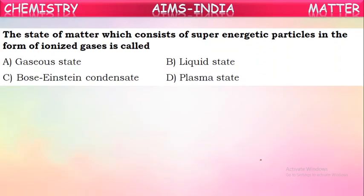Question 11: The state of matter which consists of super energetic particles in the form of ionized gases is called what? When gases are heated to very high temperatures, the molecules are ionized into positive ions and negative electrons. That super energetic state is called plasma. It is the fourth state of matter.